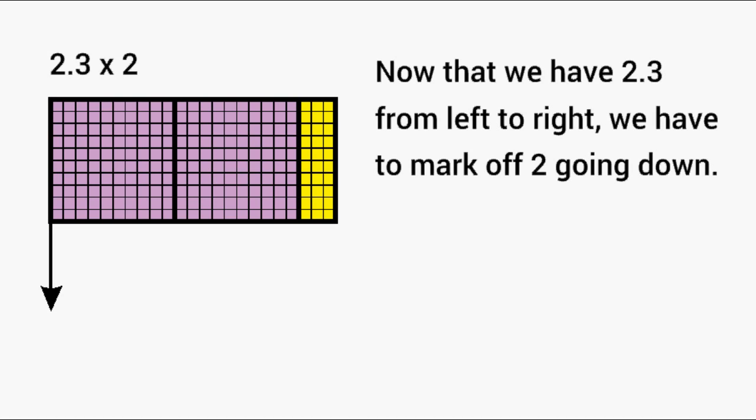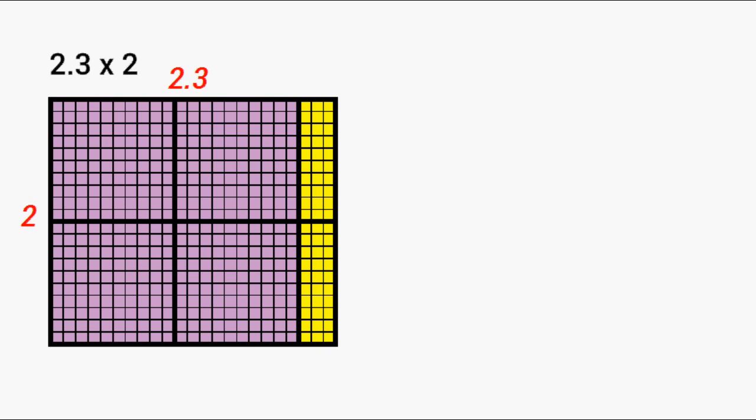We have to go a distance of 2 up and down, so basically in this example we have two groups of 2.3, which we can clearly see on the screen. Let's take each one of these sections and add them together: we have 1, 2, 3, 4, 4.3, and 4.6.